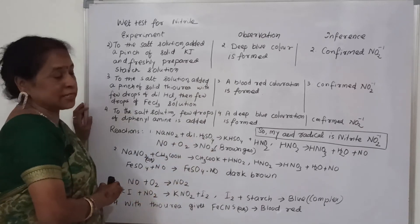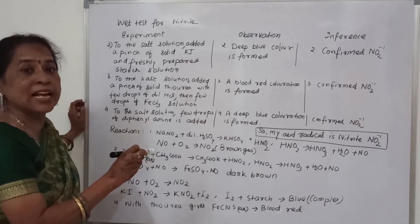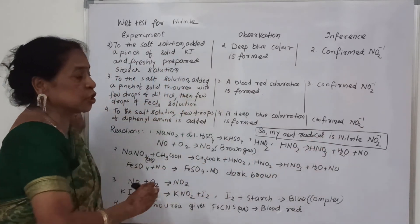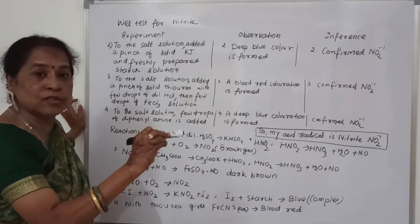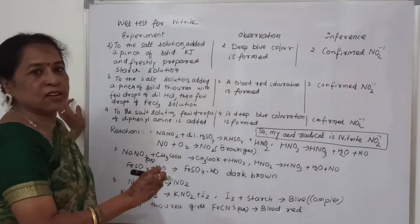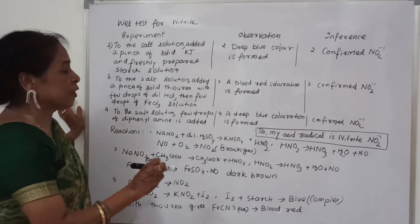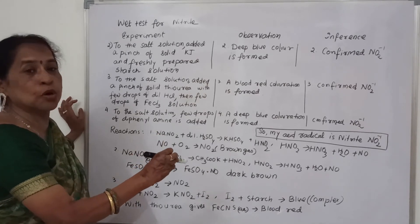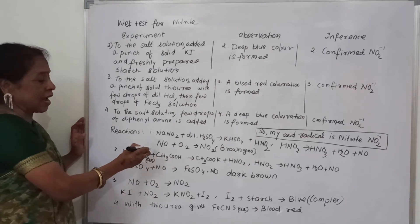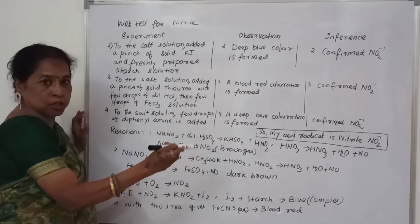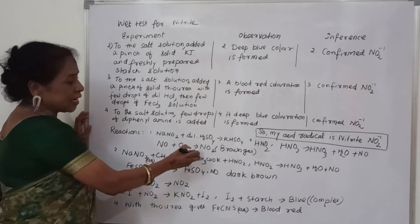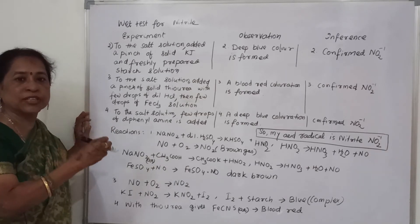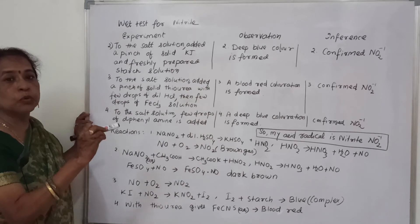NaNO₂ with dilute sulfuric acid produces nitrous acid HNO₂ as the main product. HNO₂ immediately breaks down to give HNO₃, water, and nitric oxide (NO). Nitric oxide is colorless. When NO combines with atmospheric oxygen, it gives nitrogen dioxide NO₂, which is brown in color. So during the dry test with dilute sulfuric acid, brown gas is evolved due to NO₂.